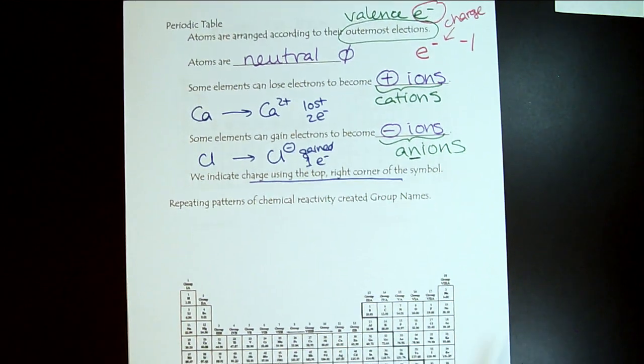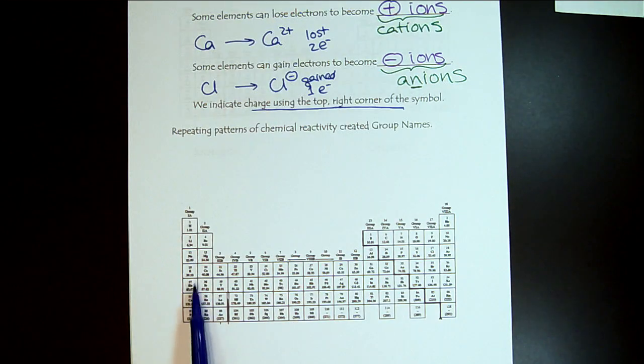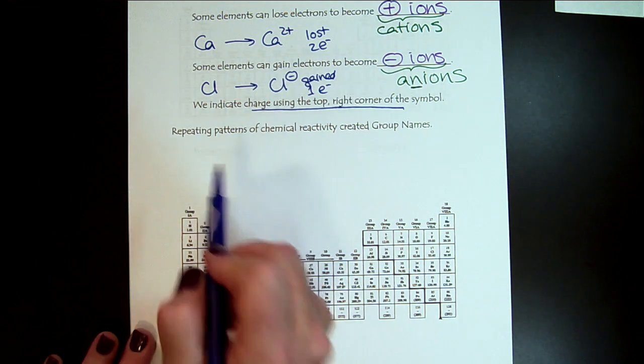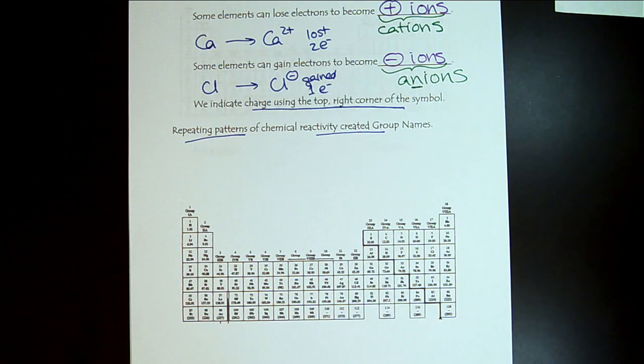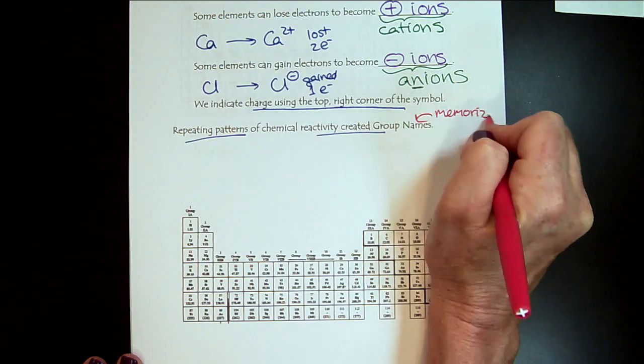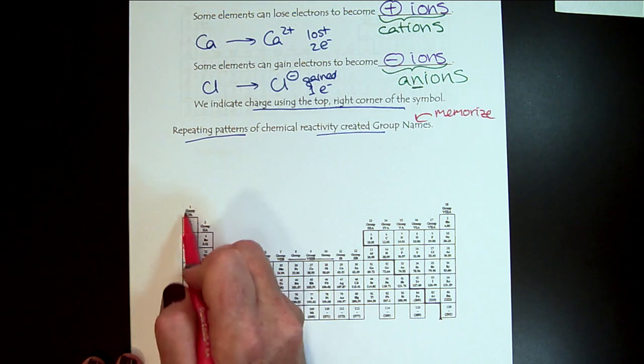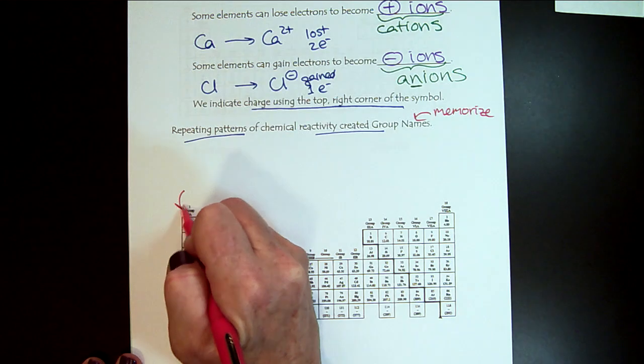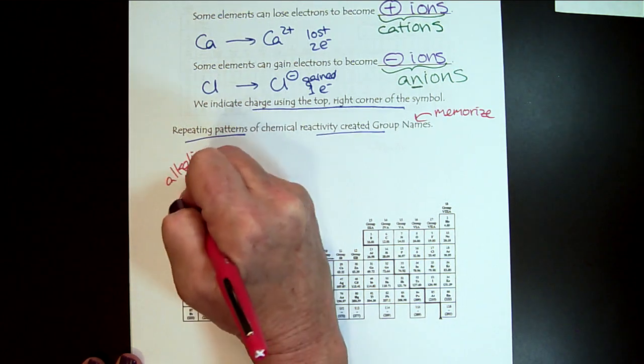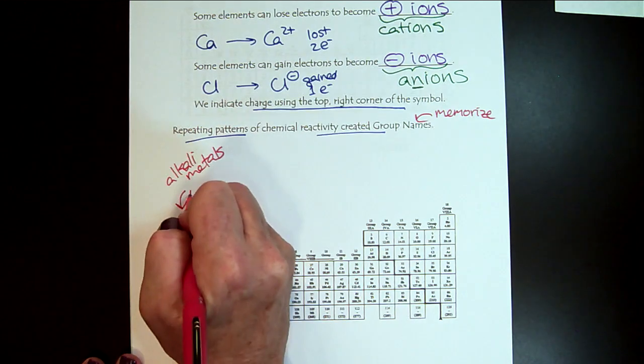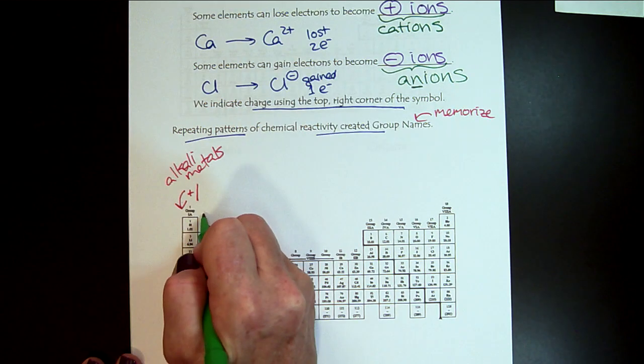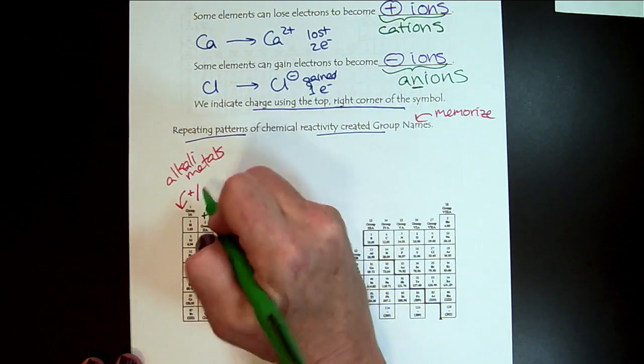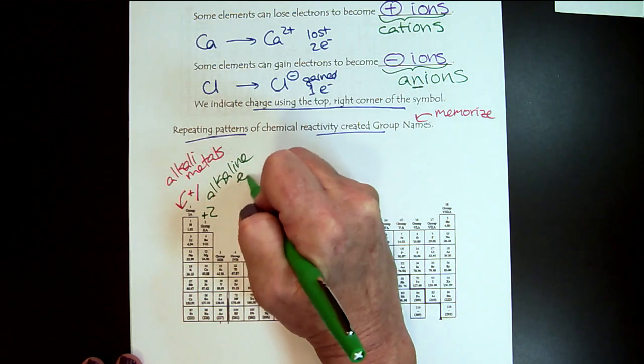Before the periodic table was even arranged like this, the chemists from days gone by were grouping the elements because they had similar chemistry. These repeating patterns of reactivity created group names. These group names do show up on standardized tests for people going into allied health careers. So it's important that we memorize them. This first column with lithium, sodium, potassium, these are called the alkali metals. These metals are all grouped together because they love to be plus one. They're fixed. They're only plus one. The second column, notice the pattern. These elements want to be plus two. They're called alkaline earth metals.